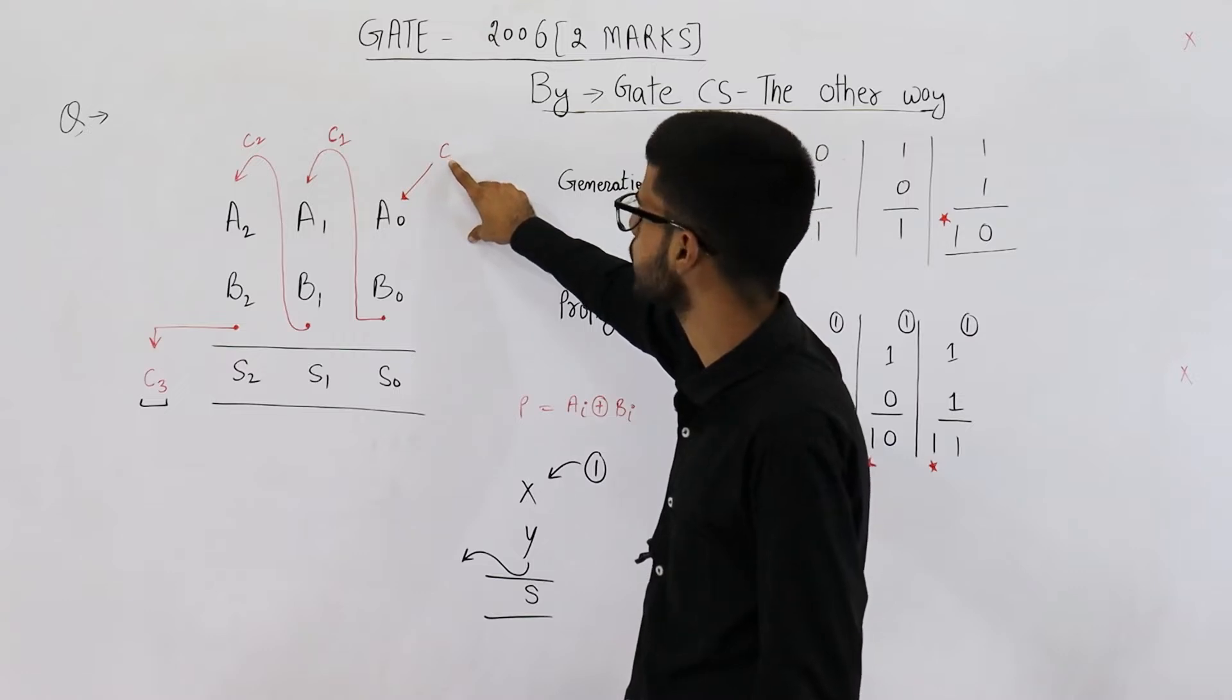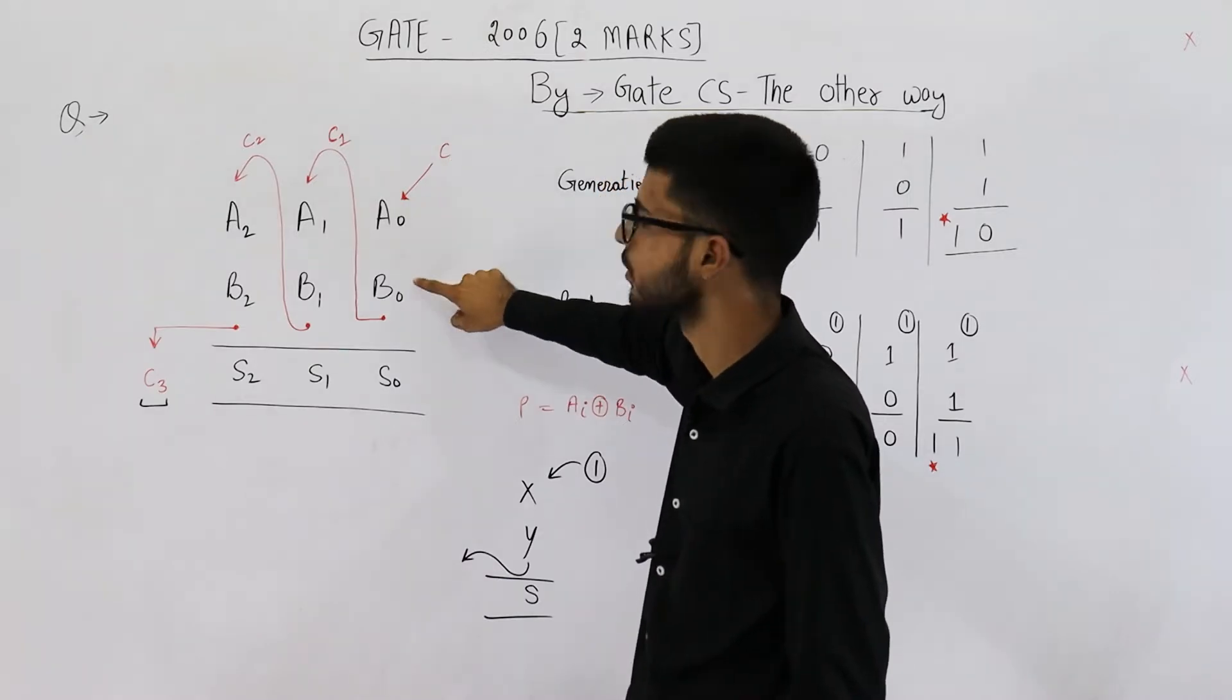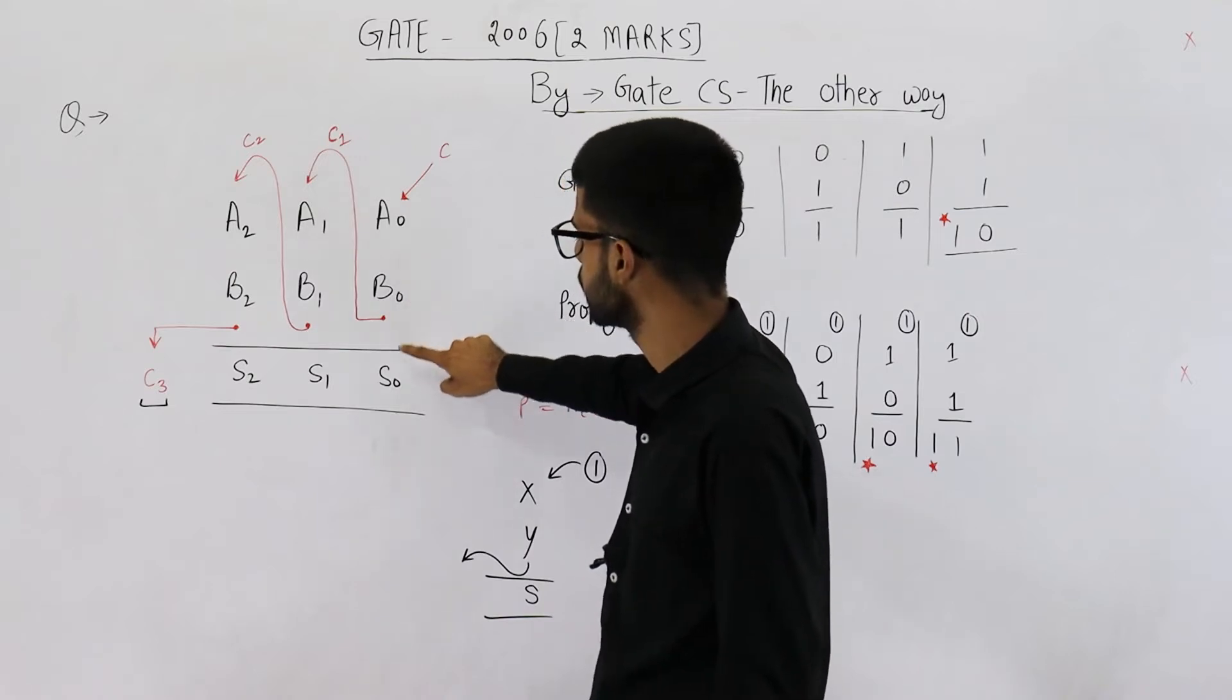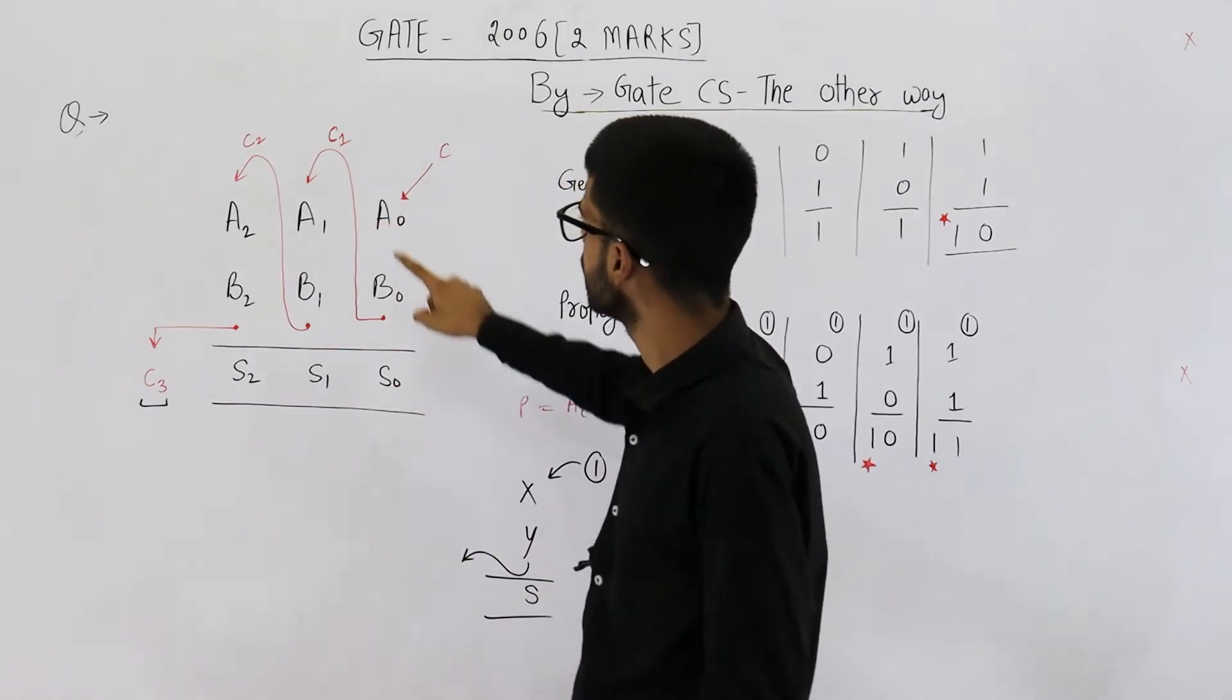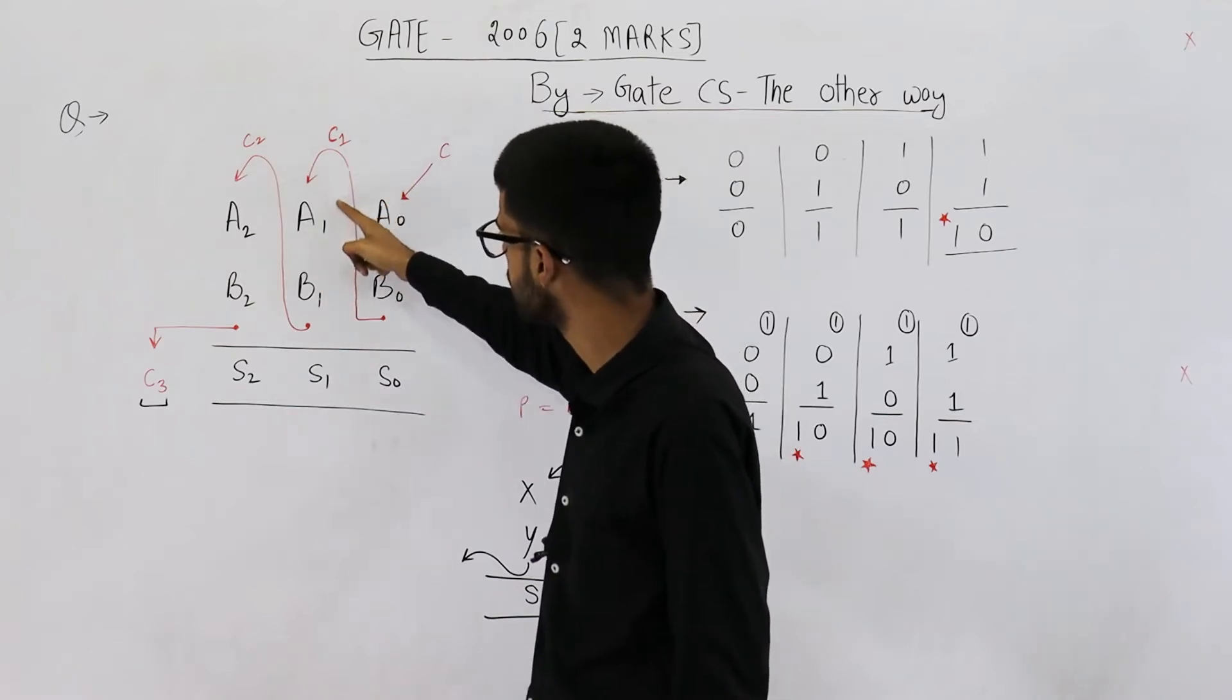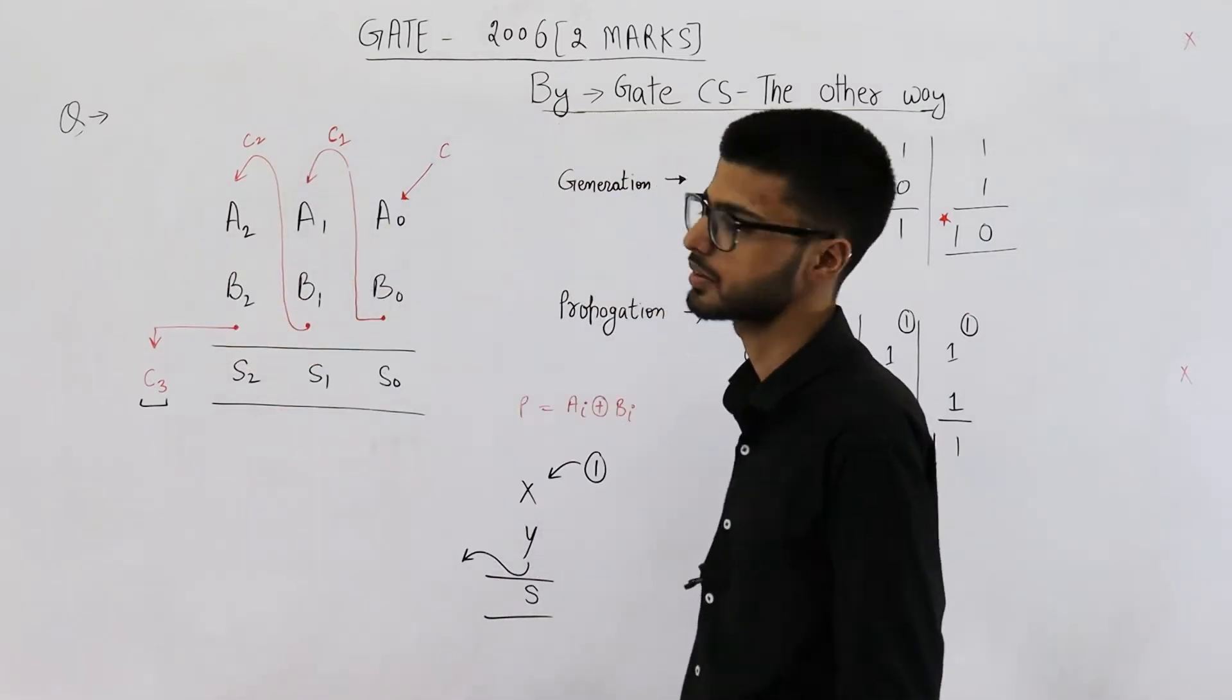C, this is the carry-in. That means we are adding this bit and these two numbers. So we are adding C, A0 and B0. The sum that you get is S0 and this stage generates a carry C1. Then you add C1, A1 and B1. These three bits are added.